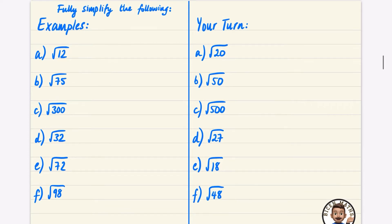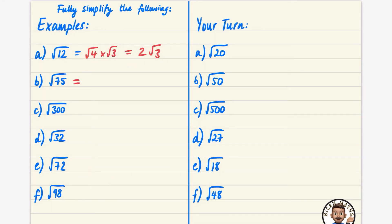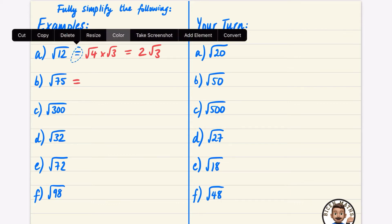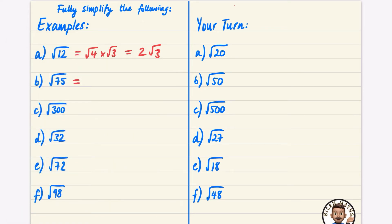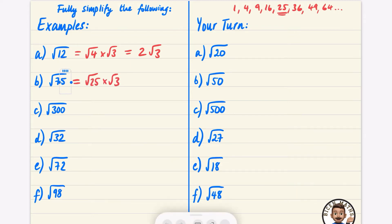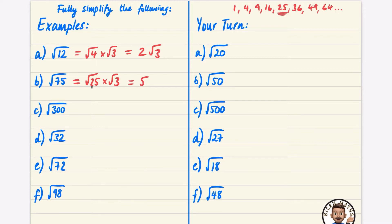I'm going to work through examples a to f. For √12: 12 can be written as 4 times 3, where 4 is a square number. √4 = 2, so √12 = 2√3. For √75: listing square numbers — 1, 4, 9, 16, 25, 36, 49, 64... 25 is a good factor here. So it's √25 × √3, because 75 = 25×3. √25 = 5, giving 5√3.